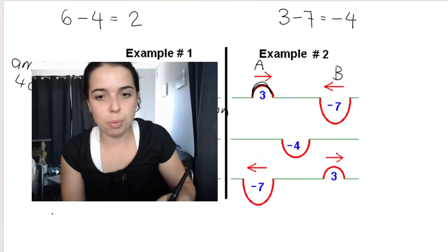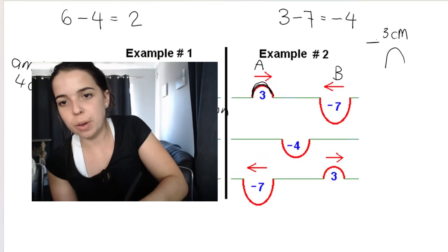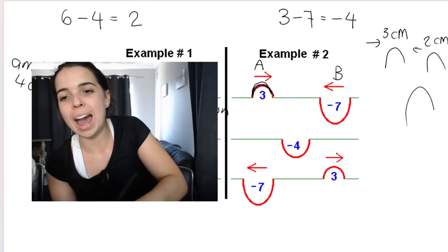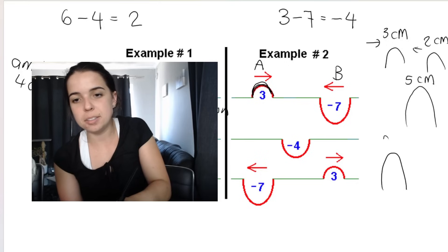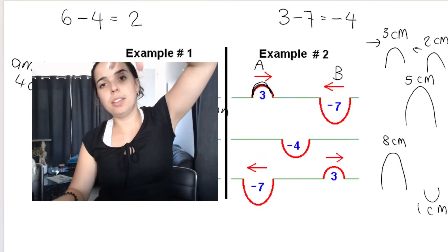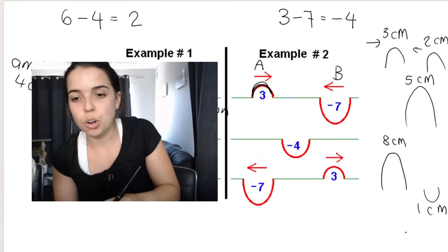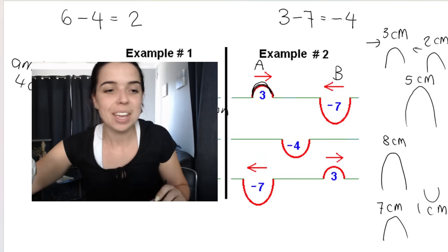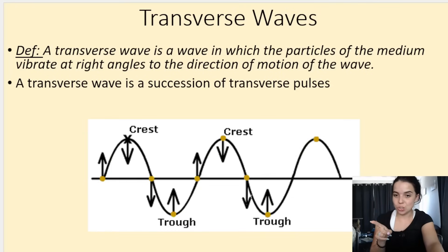To summarize with a quick example: if a three-centimeter crest meets a two-centimeter crest, they're both crests so we add them to get five centimeters. But if an eight-centimeter crest meets a one-centimeter trough, we do eight minus one to get seven — a crest of seven centimeters when superposition occurs. And that is transverse pulses. In the next video, we will look at transverse waves.